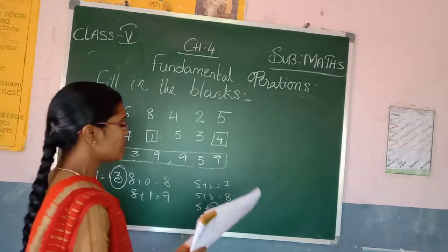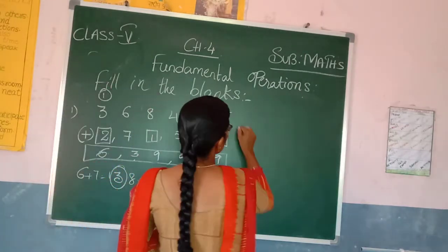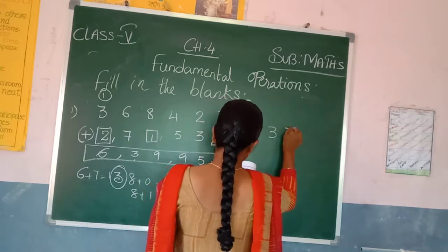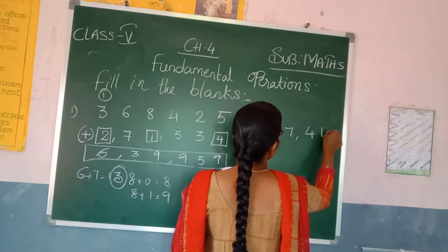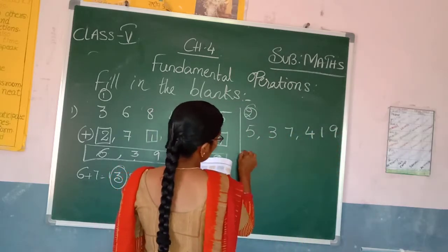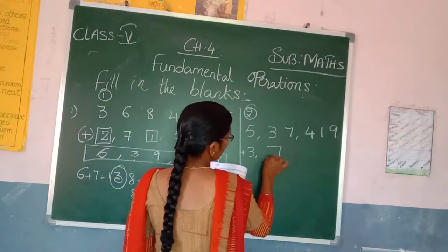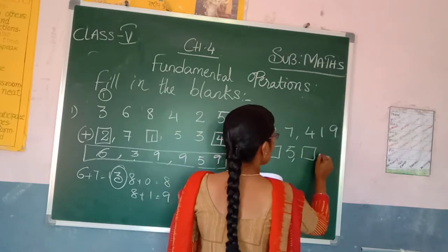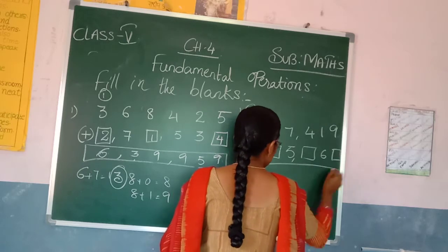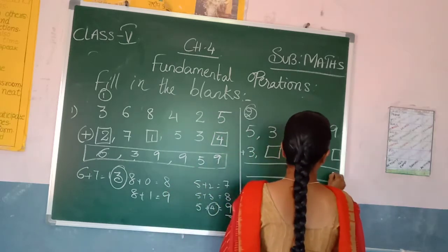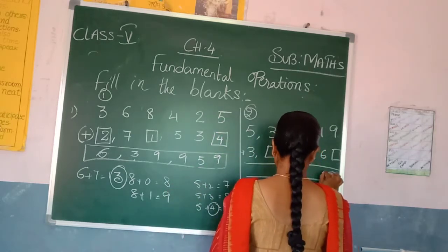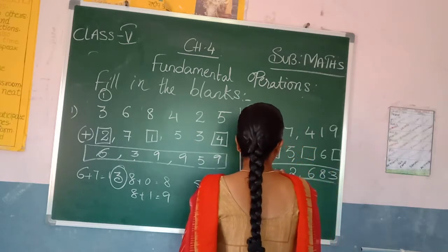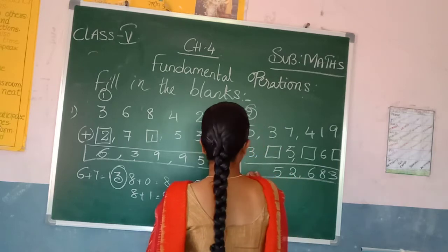Now come to the second one. What is given for you? 5, 3, 7, 4, 1, 9. Again, plus symbol, 3, box, 5. Again a box is given for you. And 6, one more box, and answer. Now see the answer given: 3, 8, 6, 2, 4, 1, 8.